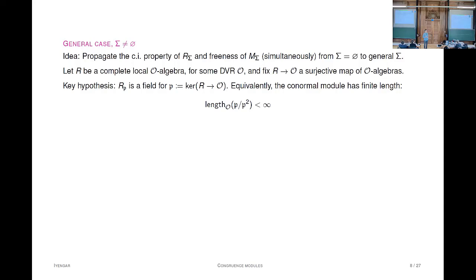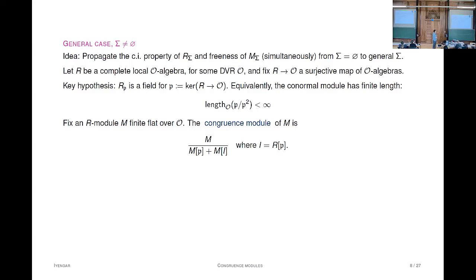The key hypothesis is that when you localize R at the kernel of this augmentation, which I'm calling P, the ring is a field—so P is a minimal prime with no nilpotents. This can be phrased in terms of the conormal module P mod P-squared, which should have finite length as an O-module. You fix an R-module M; in their context, M will be finite flat over O. Then Diamond introduces the congruence module of M as a certain quotient.